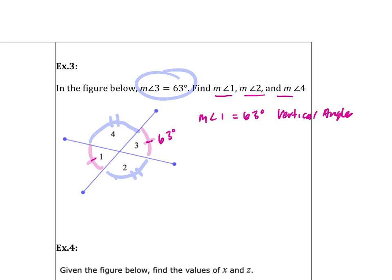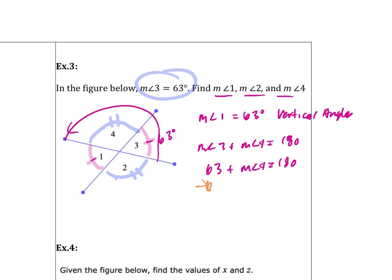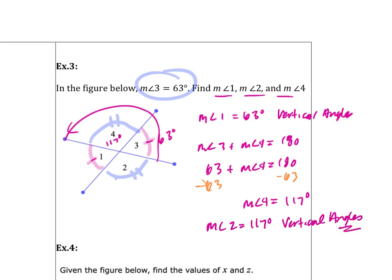Now do the math for the remaining angles. The measure of angle three plus the measure of angle four equals 180 degrees. So 63 plus the measure of angle four equals 180. Subtract 63 from both sides and you get the measure of angle four equals 117 degrees. Since angle two and angle four are vertical angles, the measure of angle two equals 117 degrees. That's the shortcut — you don't have to solve it all over again.